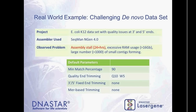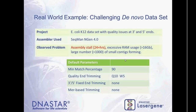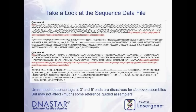We'll look at a real-world example of a challenging dataset. This is an E. coli k-12 dataset with quality issues at both the 3' and 5' ends, assembled with SeqMan Engine 4.0. The problem was the assembly stalled after 24 hours, was still running when it should have finished overnight, using more than 16 gigs of RAM when it should use no more than about 8, and there were over a thousand small contigs forming - all with default parameters.